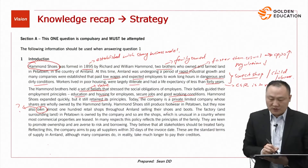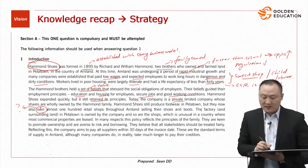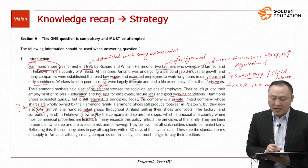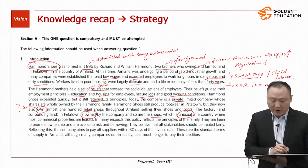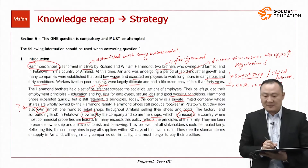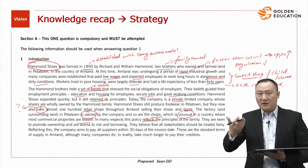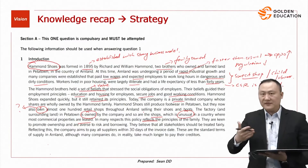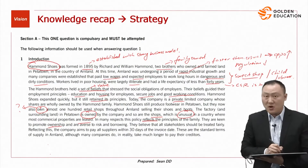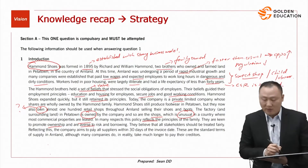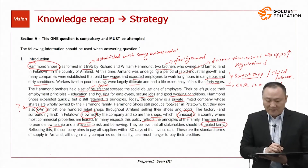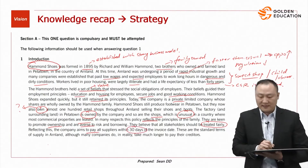The factory and surrounding land in Potato is also owned by the company, as are the shops — which is unusual in a country where most commercial properties are leased. In many respects, this policy reflects the principles of the family. Their fundamental values have never changed — they are keen to promote ownership and are averse to risk and borrowing.